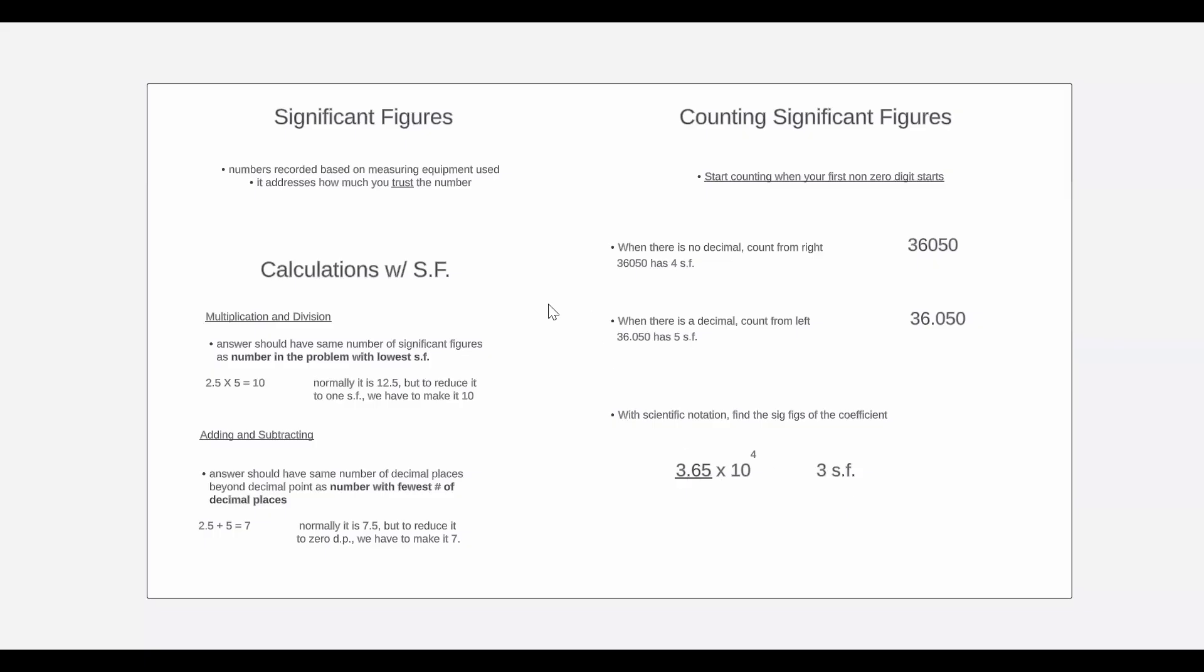Now we're going to be moving on to calculations with significant figures, and this will help you during dimensional analysis and stoichiometry. So during multiplication and division, your answer should have the same number of significant figures as the number in the problem with the lowest significant figures. So in 2.5 times 5, 2.5 has two significant figures, and 5 has one. So we would want our answer to have one significant figure because it's obviously the lowest one. So normally this equation evaluates to 12.5, but to reduce it to one significant figure, we have to make it 10, which is one significant figure.